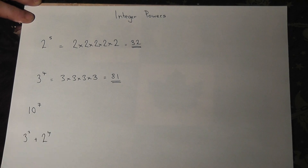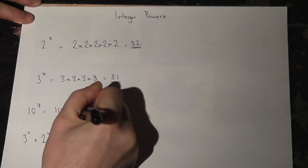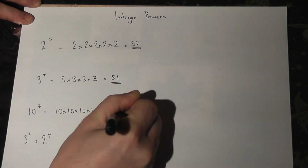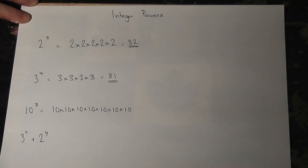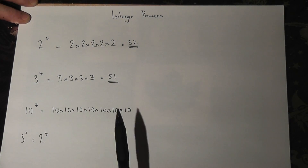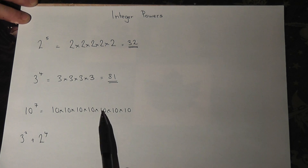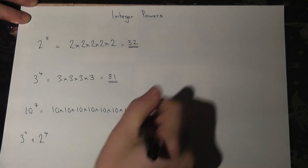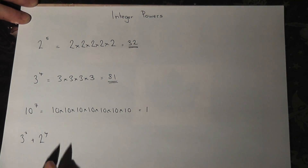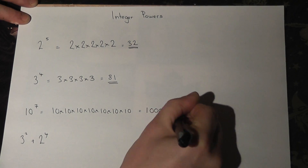Now 10 to the power of 7 looks quite difficult because this is 10 multiplied together 7 times. However, multiplying by 10 is quite easy — every time you multiply by 10, an extra zero is placed on the end. So: 10, 100, 1000, 10,000, 100,000, 1 million, 10 million. Or quite simply, 1 with 7 zeros at the end.